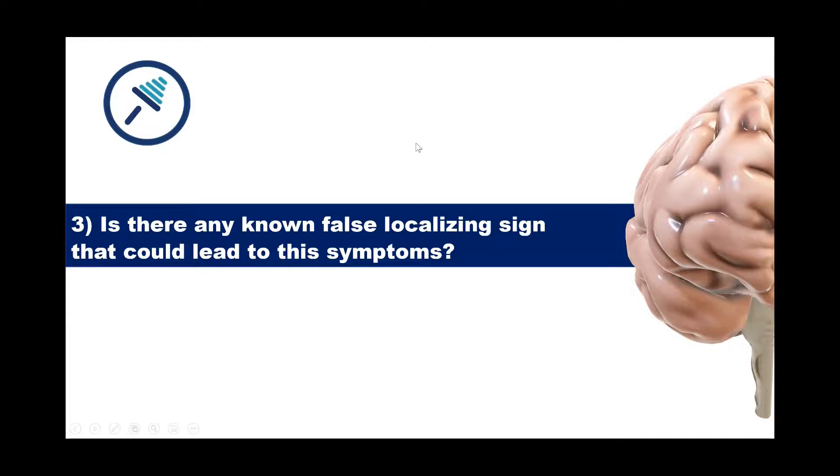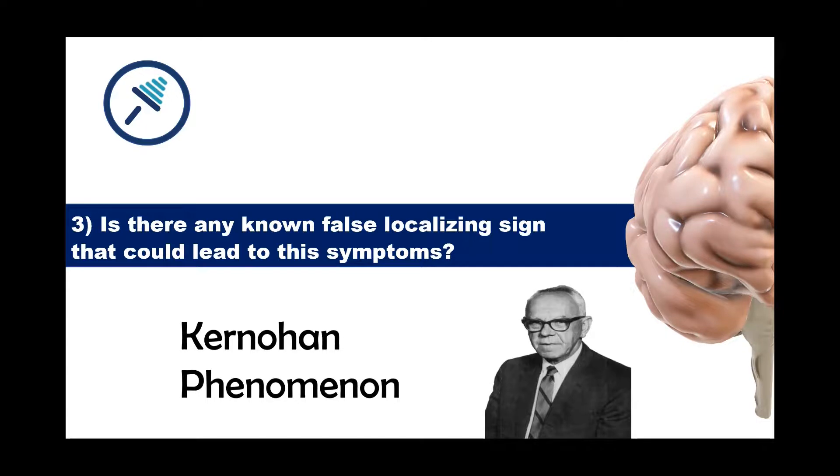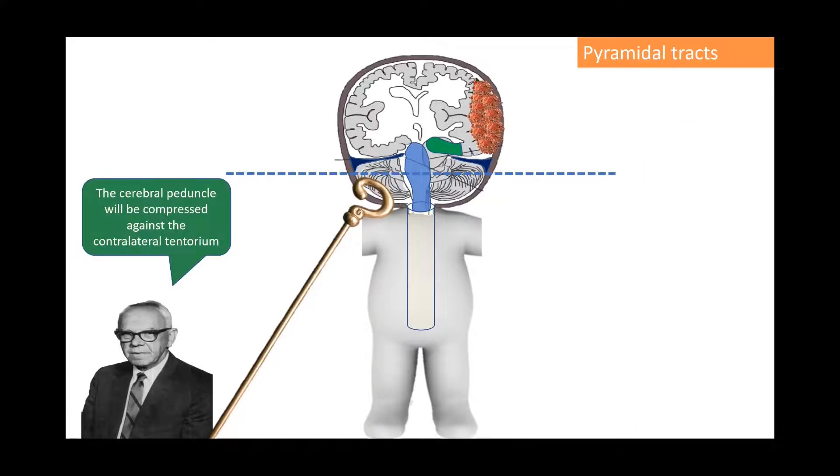Our last question is, is there any known false localizing sign that could lead to these symptoms? And one possible answer here is Kernohan phenomenon. We're going to talk about that. So we can see here in this patient, highlighted in green, this is the uncus,